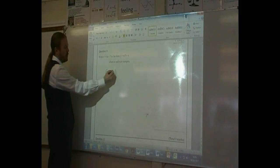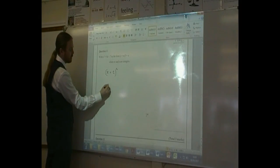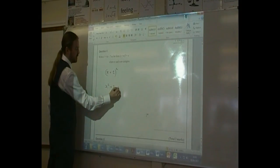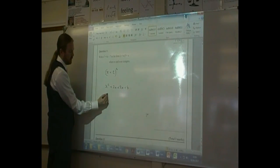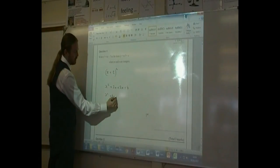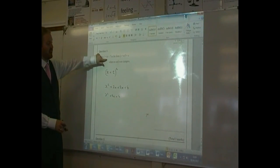And I'll show you why. If we expand that bracket, what we get is x squared plus 2x plus 2x plus 4, which is x squared plus 4x plus 4, which looks very similar to this here.